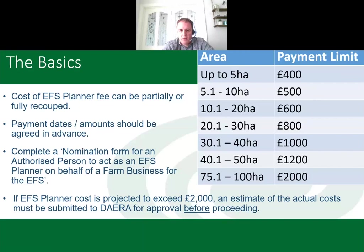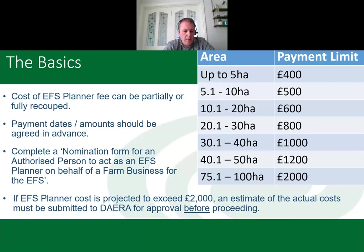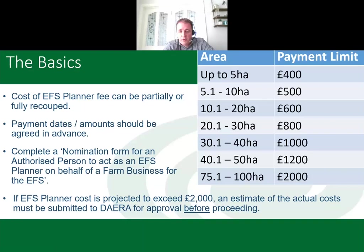It's important to keep the reimbursement limits in mind when negotiating a price with the planner. If the EFS planner cost is projected to exceed £2,000 - which would generally apply to farms over 100 hectares - an estimate of the actual cost must be submitted to DAERA for approval before proceeding. This must be done before the plan is completed, not after.